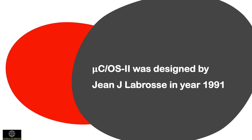MicroC/OS-2 allows defining several functions in C, each of which can execute as an independent thread or task. Each task runs at a different priority and runs as if it owns the CPU.